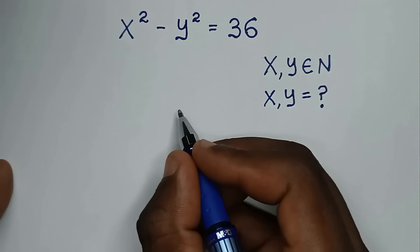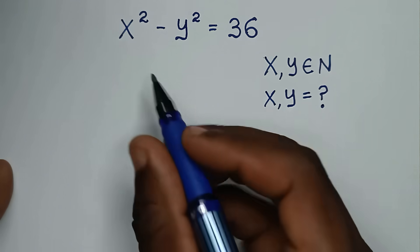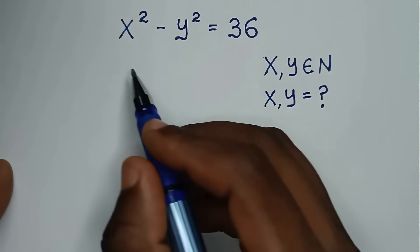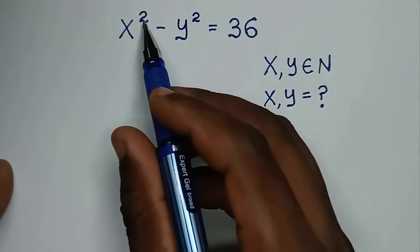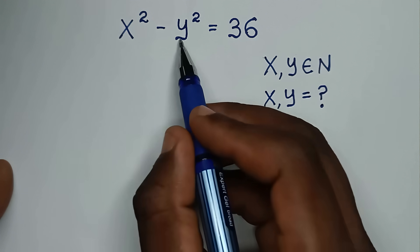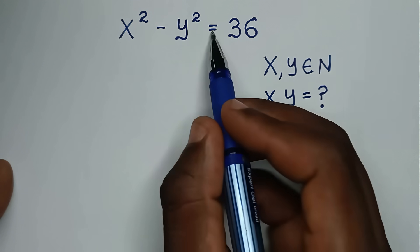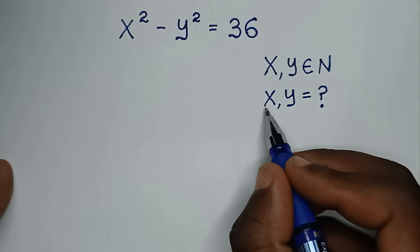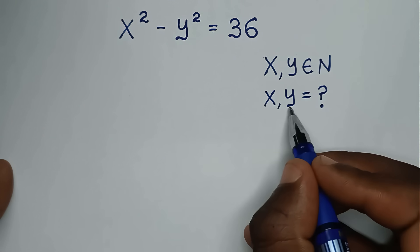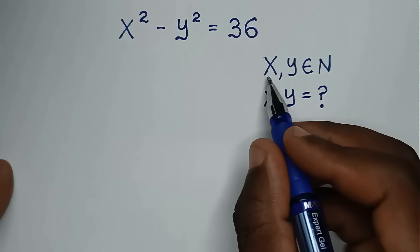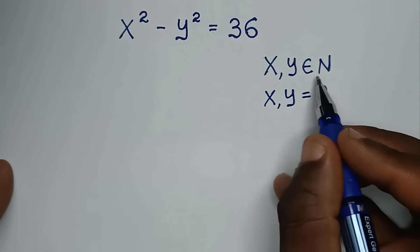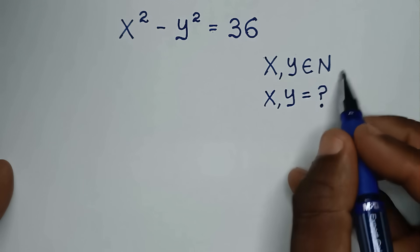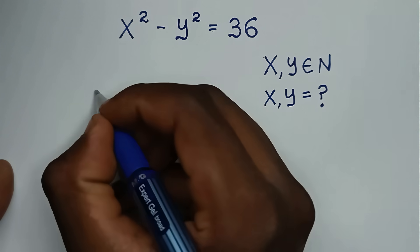Hello, you are welcome to solve this math problem of x squared minus y squared is equal to 36, to find the values of x and y such that x, y is an element of the natural numbers.